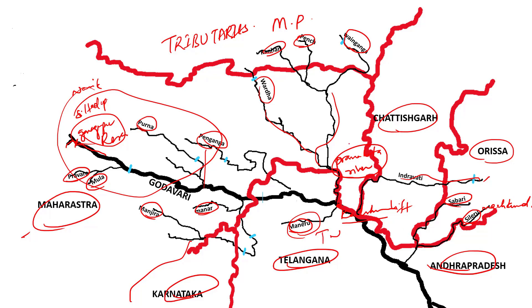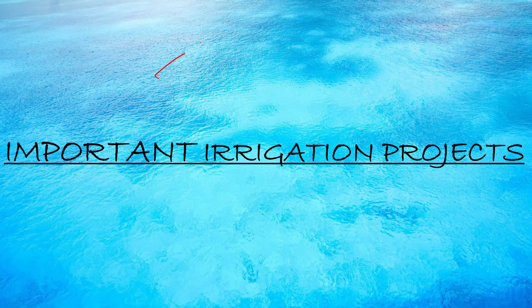Among tributary origins: Pench and Kanha are from Madhya Pradesh; Wainganga from MP; Varda from MP; Indravati from Odisha; and Sabari and Sileru also from Odisha.